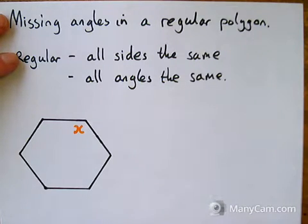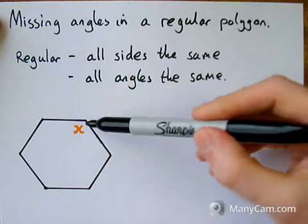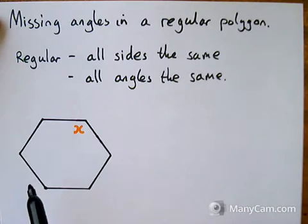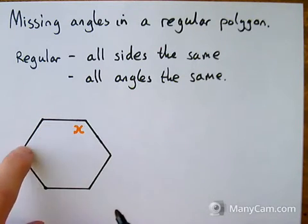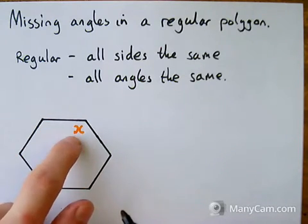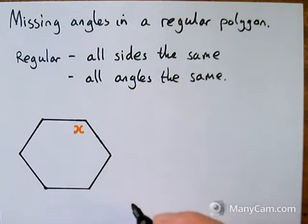Now here I've drawn a six-sided shape. It's a regular six-sided shape, so all of the sides are the same and all of the angles are the same, and I want to know the size of this angle. I've only drawn one in there because all of these angles are identical, but I'm just going to be working out one of these angles.